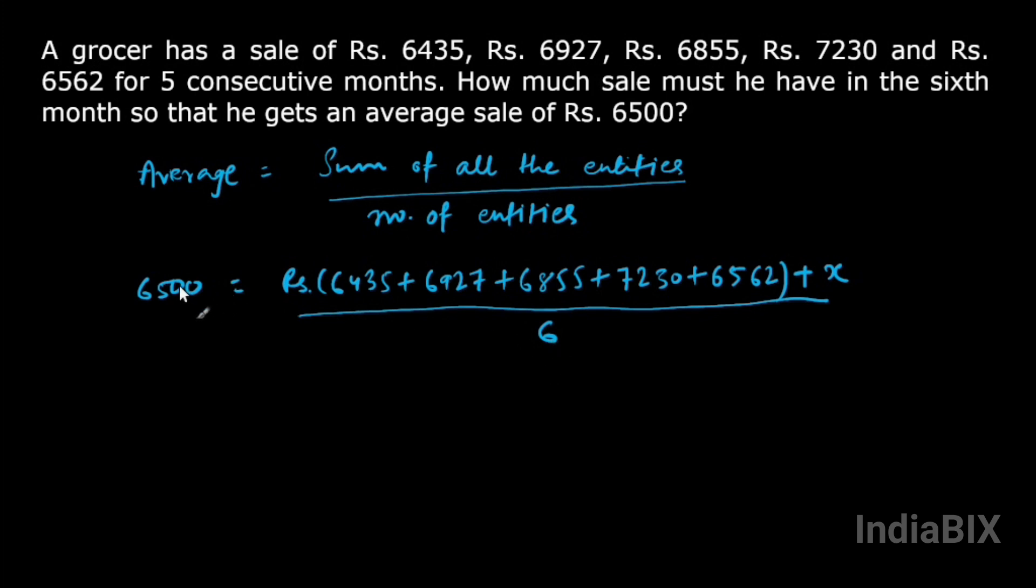We can do the cross multiplication. 6500 into 6, and the sum of these five entities will be 34009 plus x. And 6500 into 6 will be rupees 39000. We can bring this in the left hand side.